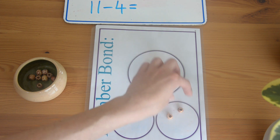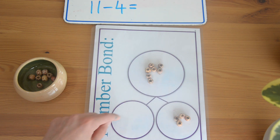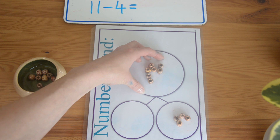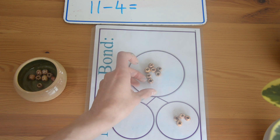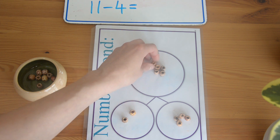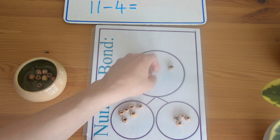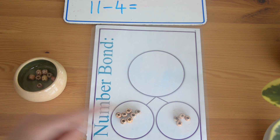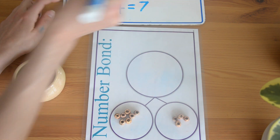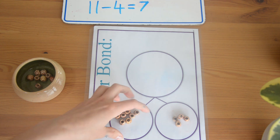So part of this whole number is going to be four. I'm going to move one of my parts to this side — it doesn't matter which one I put it to, but I'm putting it over here. That means the remaining pieces must be my other part. Let's count how many we have left: 1, 2, 3, 4, 5, 6, 7. So eleven take away four equals seven.